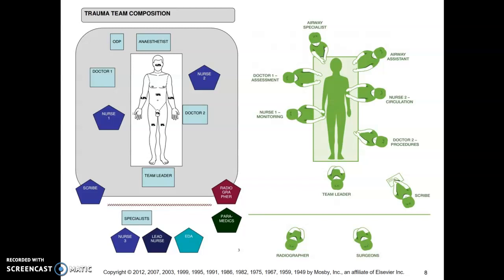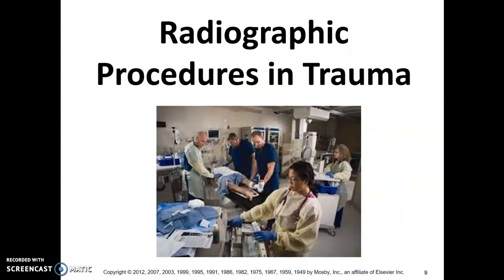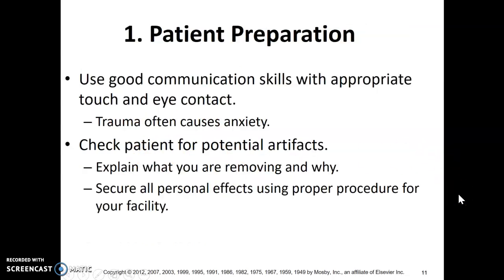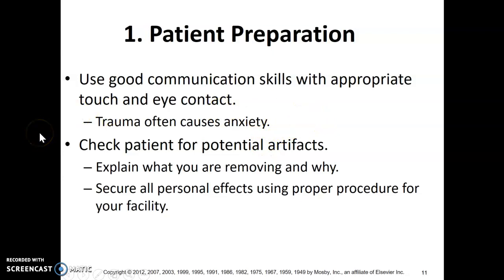General procedural guidelines: patient prep, collimation, proper SID, ID markers, radiation protection, patient instructions, immobilization, and documentation — you already know all this. For patient prep, use communication skills with appropriate touch and eye contact. Trauma causes anxiety, and your patient may not be cooperative, but that's not necessarily intentional.